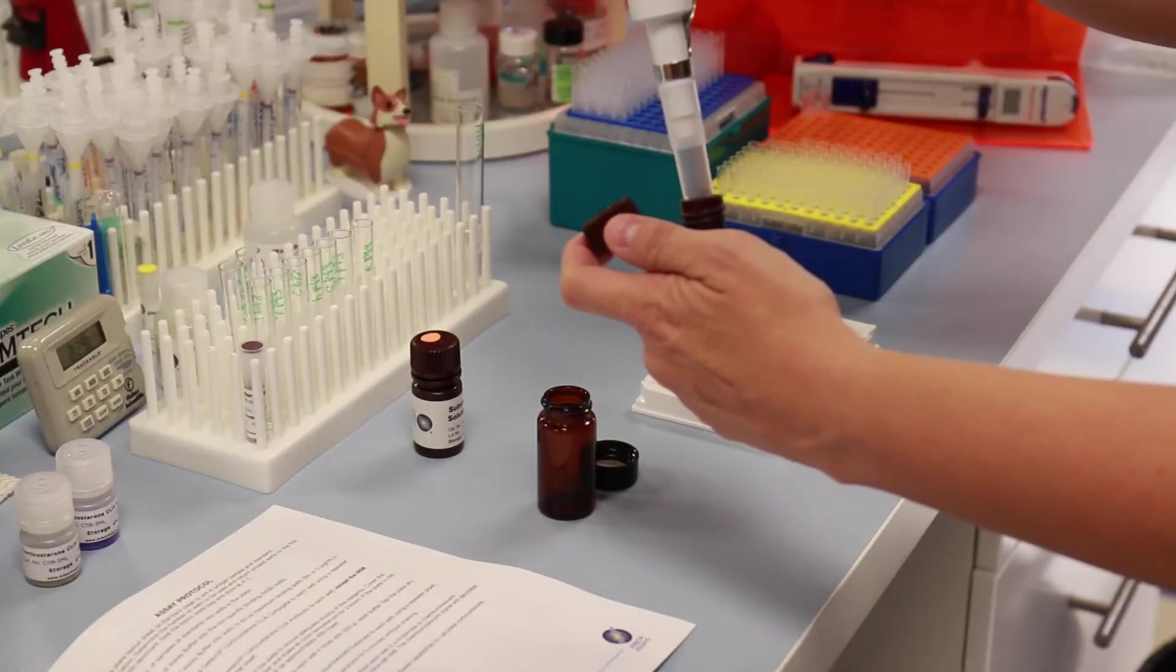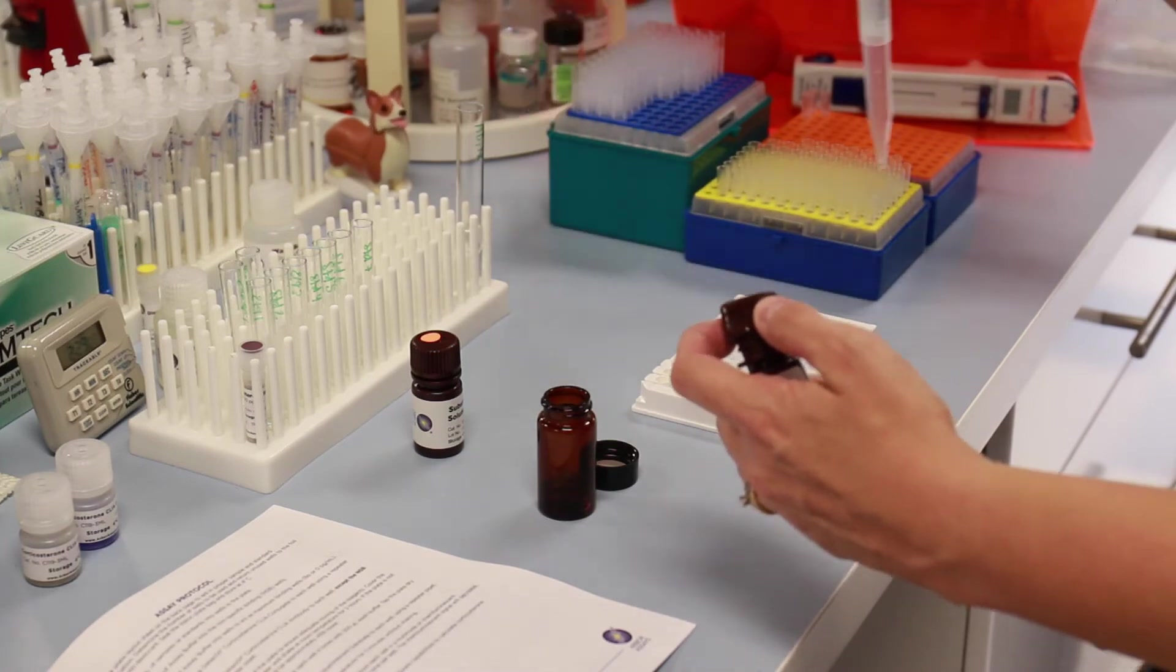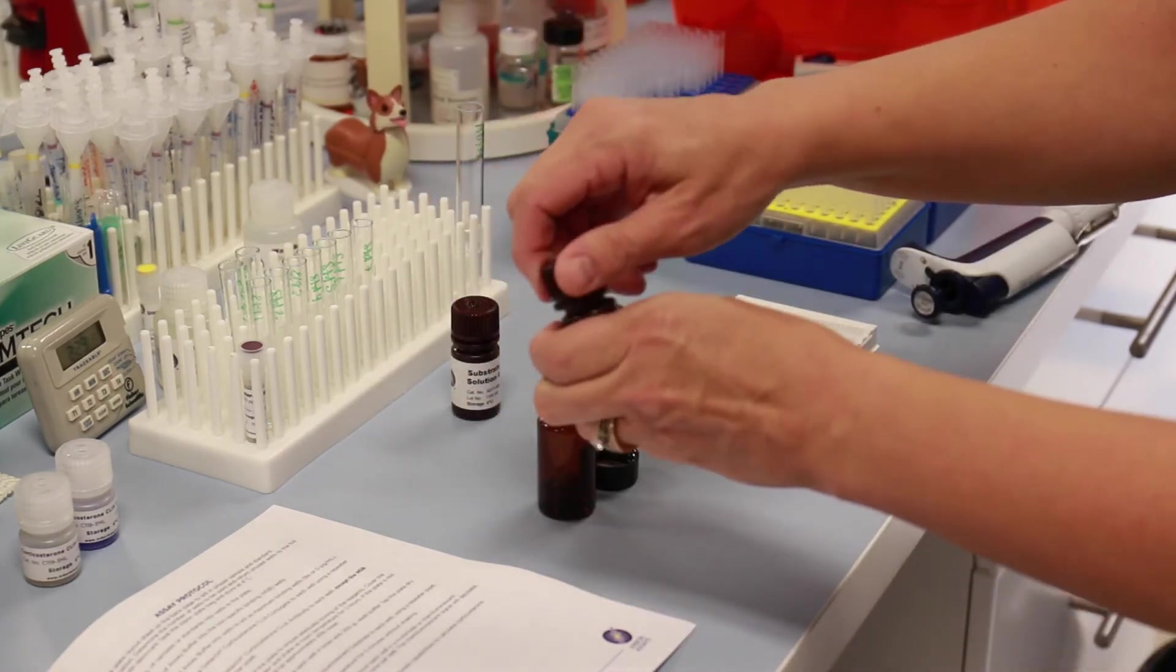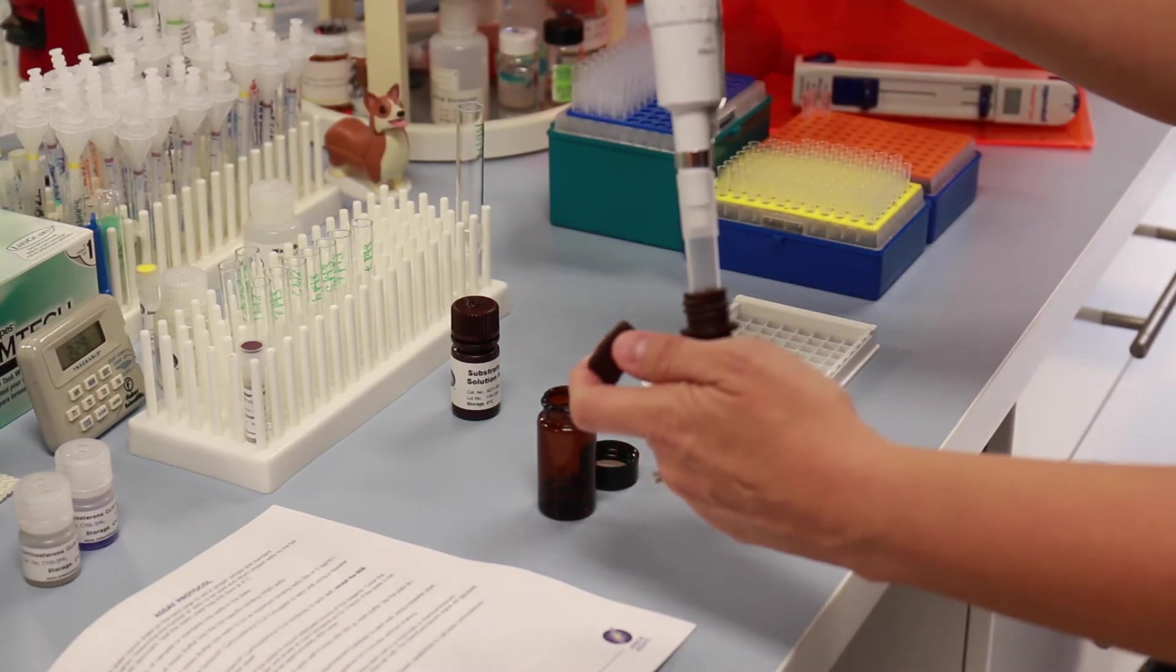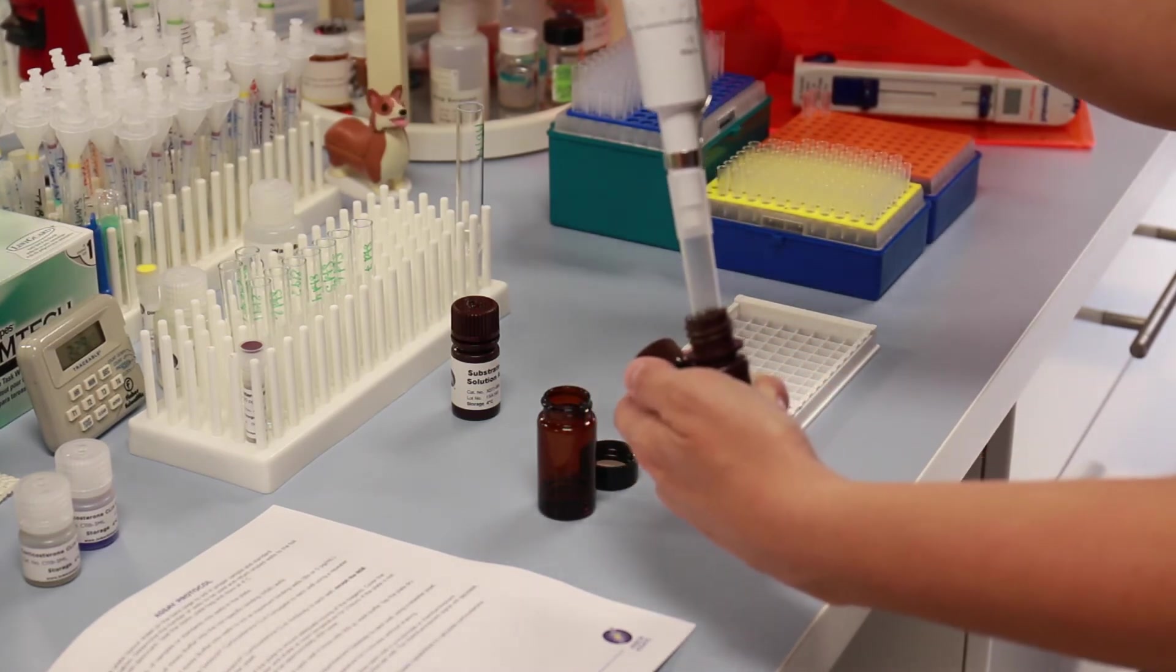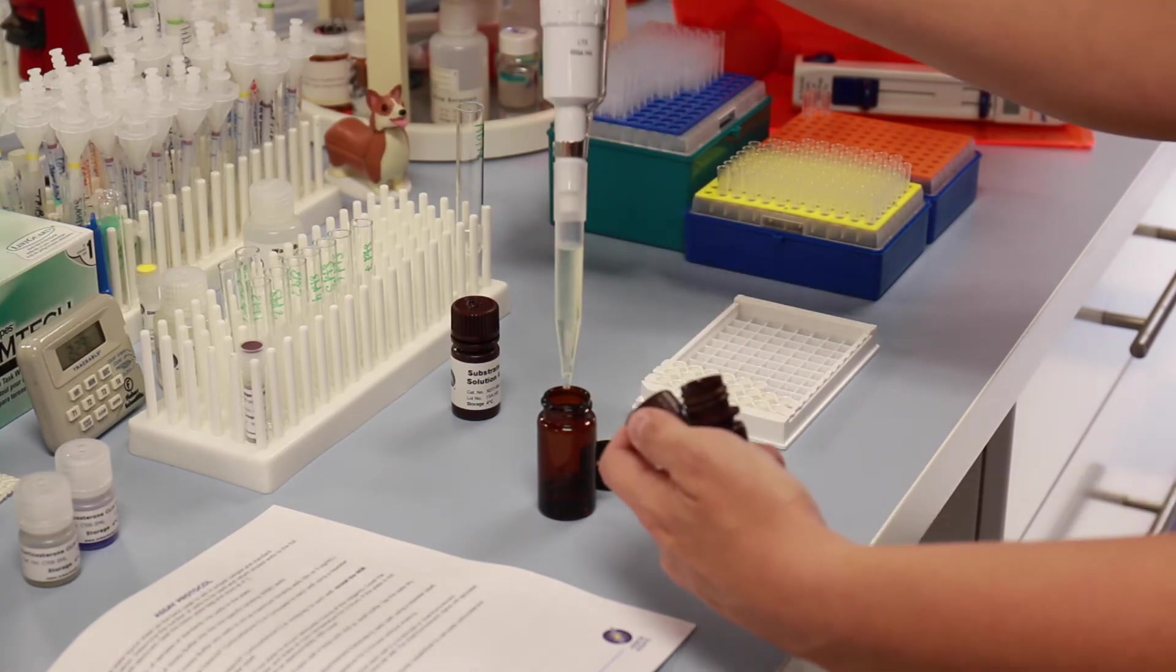To prepare the chemiluminescent substrate, mix one part of substrate solution A with one part of substrate solution B in a brown bottle. This mixture can be stored at four degrees centigrade for up to one month.